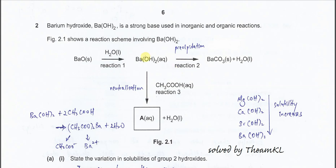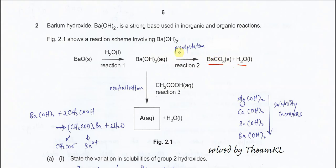Question 2. Barium hydroxide is a strong base used in inorganic and organic reactions, and Figure 2.1 shows the reactions that involve barium hydroxide. It started with barium oxide, which reacts with water to form barium hydroxide. After that, barium hydroxide will form barium carbonate with water — from aqueous solution to a solid. So this is a precipitation reaction.